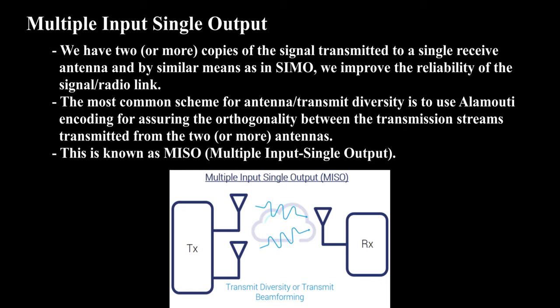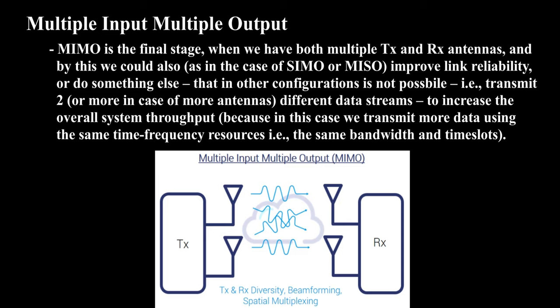This is known as MISO, Multiple Input Single Output. MIMO is the final stage, when we have both multiple TX and RX antennas, and by this we could also improve link reliability, or do something else that in other configurations is not possible — that is, transmit two or more different data streams to increase the overall system throughput, because in this case we transmit more data using the same time-frequency resources.